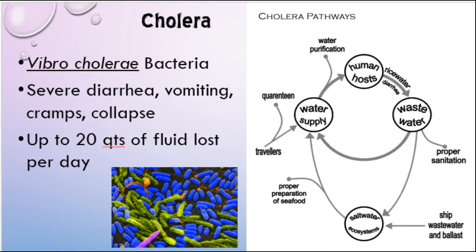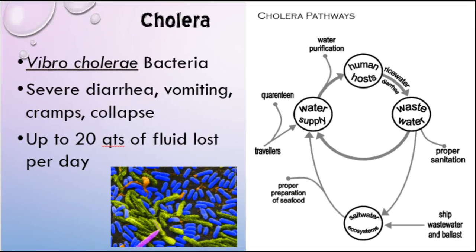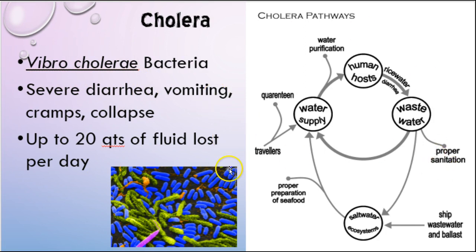When we start getting into some of the other pathogens, we talk about cholera, which is caused by a particular type of bacteria. It causes severe diarrhea, vomiting, and cramps. In any of these diseases where you have severe diarrhea, it can eventually cause hemorrhaging and severe dehydration that can lead to death if not treated immediately.